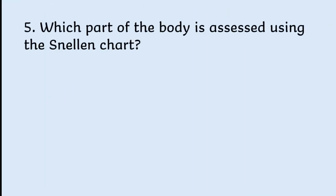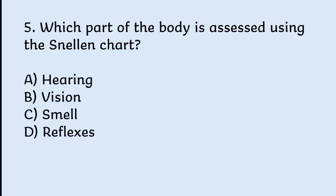Which part of the body is assessed using the Snellen chart? Options: hearing, vision, smell, reflexes. Correct answer is vision.